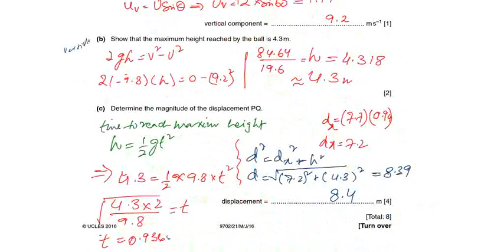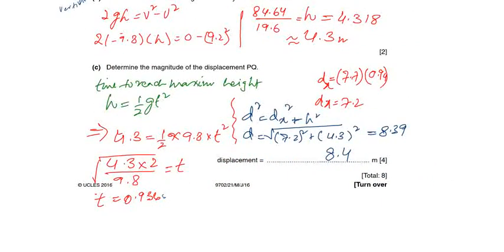d equals the square root of 7.2 squared plus 4.3 squared, which gives 8.39. Rounding up gives 8.4 meters. Okay, yes.